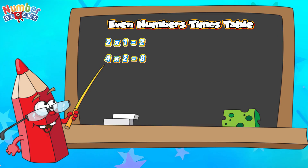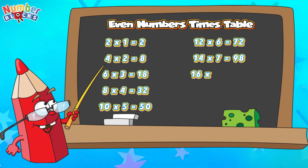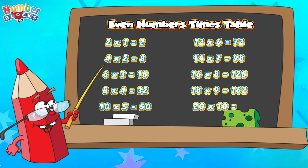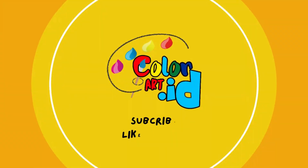Two times one equals two. Four times two equals eight. Six times three equals eighteen. Eight times four equals thirty-two. Ten times five equals fifty. Twelve times six equals seventy-two. Fourteen times seven equals ninety-eight. Sixteen times eight equals one-hundred-and-twenty-eight. Eighteen times nine equals one-hundred-and-sixty-two. Twenty times ten equals two-hundred.